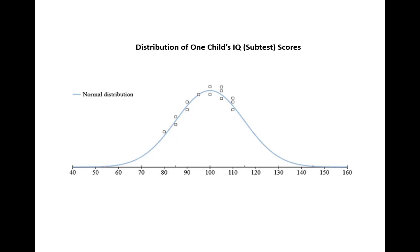In almost every test, there are what we call subtests that measure different parts of — in this case — the IQ. I know the scores in this graph are scattered, but I also know that this child's IQ score was 100. But as we can see, her subtest scores were not all 100; in fact, they ranged from around 80 up to 110.